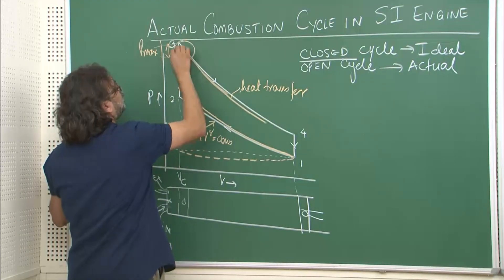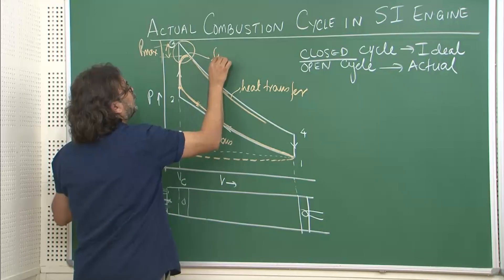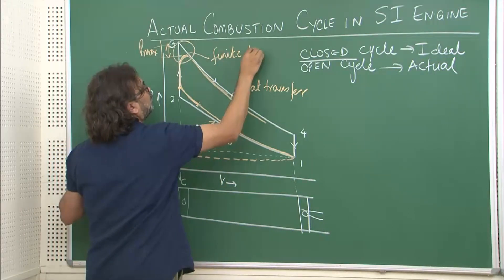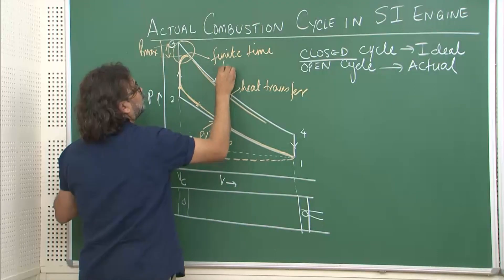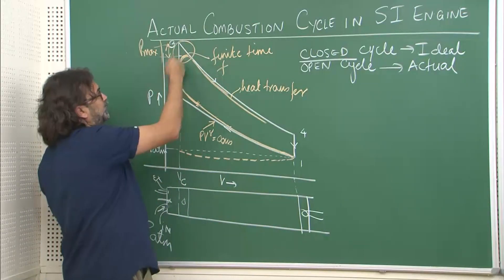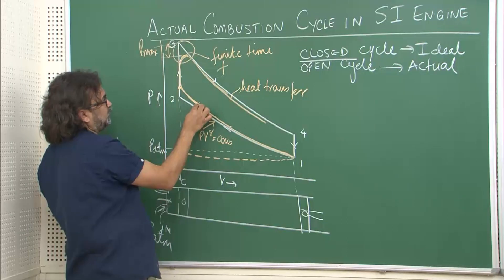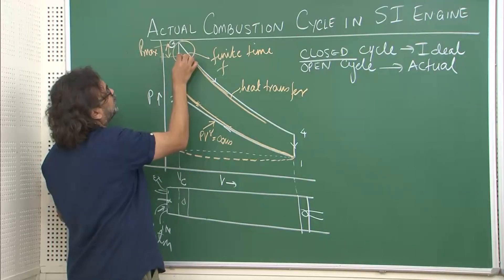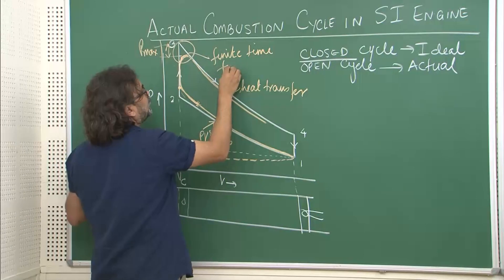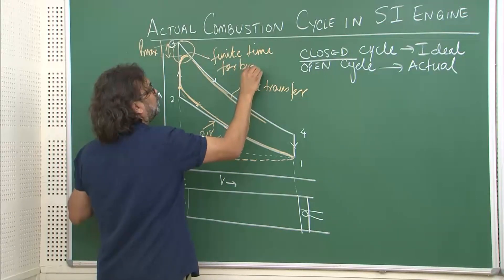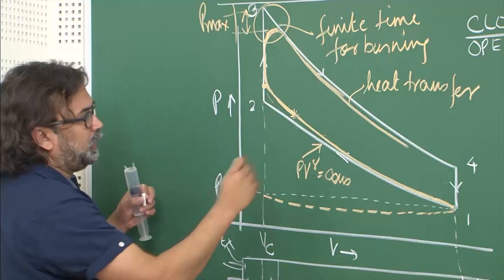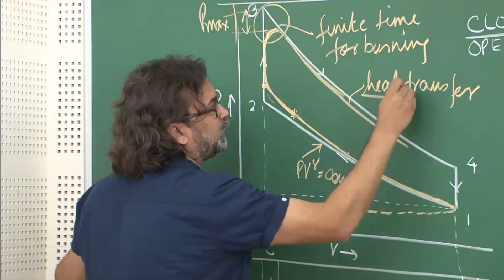One key loss is due to non-instantaneous burning: combustion actually starts before TDC and continues for a finite duration. This finite time for burning means the pressure rise is spread over a period rather than occurring instantaneously at constant volume as assumed in the ideal cycle.